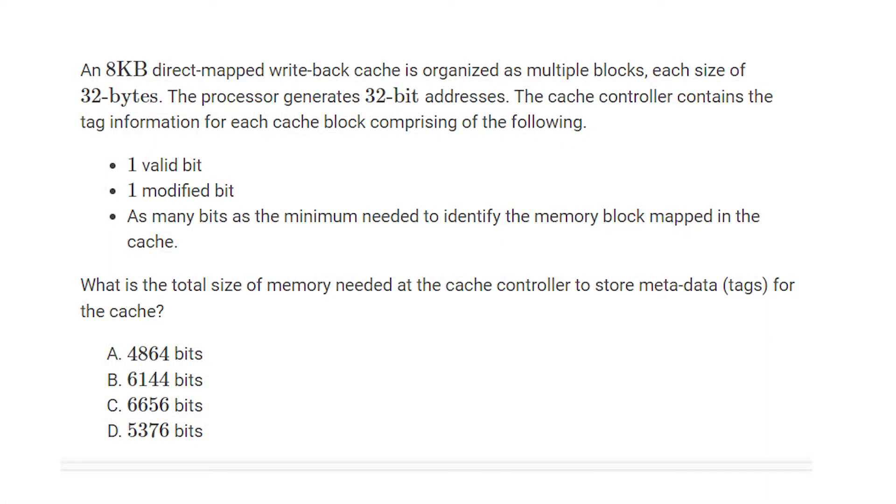An 8KB direct mapped writeback cache is organized as multiple blocks, each size of 32 bytes. The processor generates 32-bit addresses.